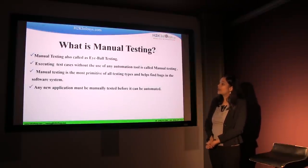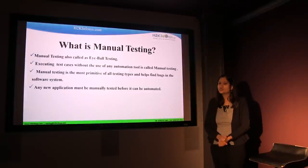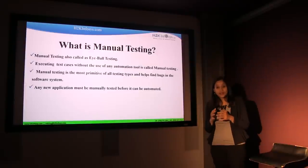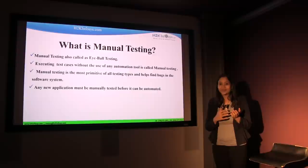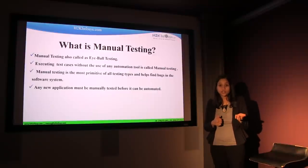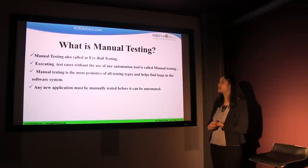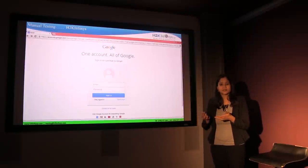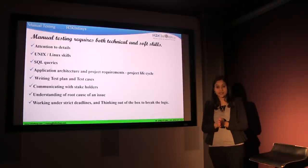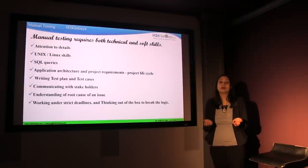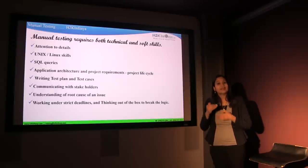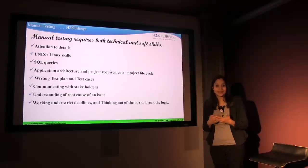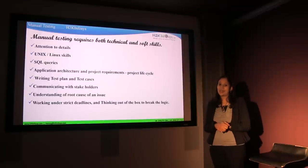Manual testing is the most primitive of all testing types and helps find bugs in the software system. This is the basic way to find out whether there is a bug or not. Before using any automation tools, you manually test to see whether it's working. Any new application must be manually tested before it can be automated. Automation is always a subsequent process — the very first step is always to do manual testing, and once it's manually tested, you can then automate it for subsequent tests.